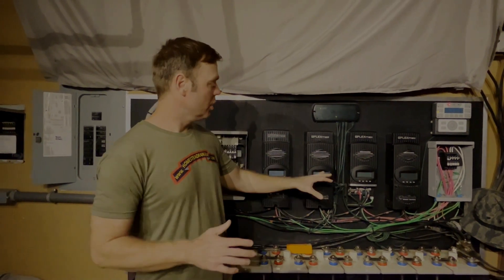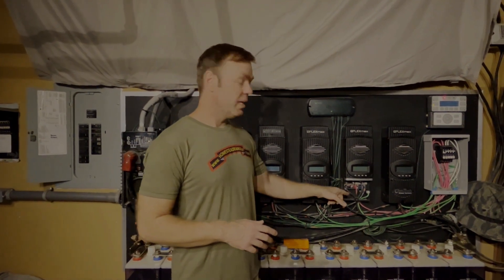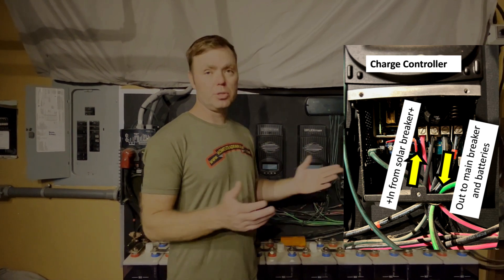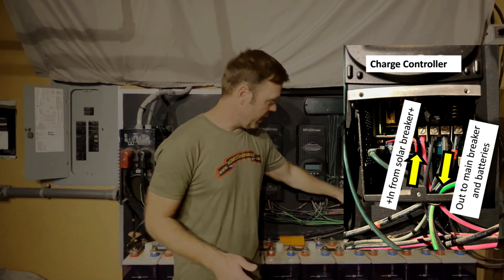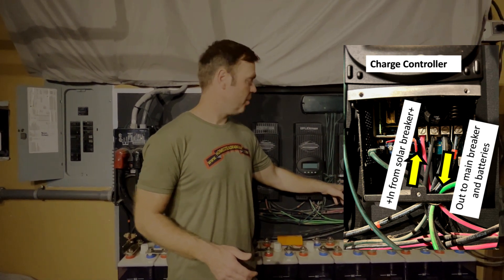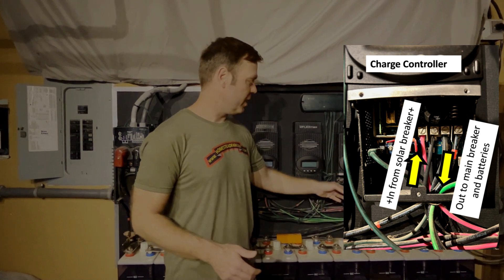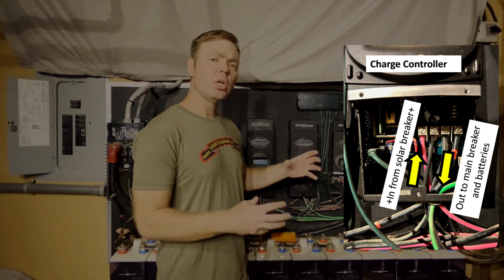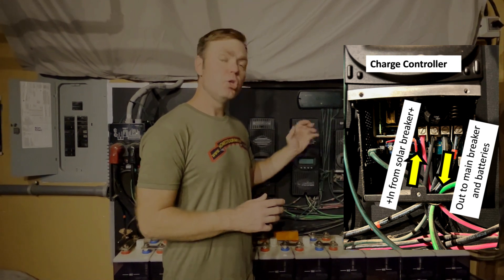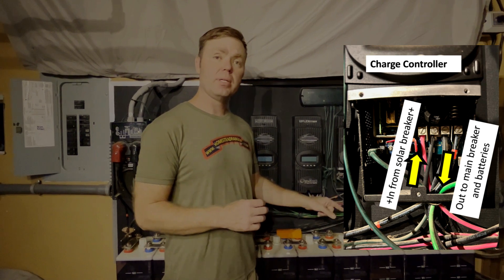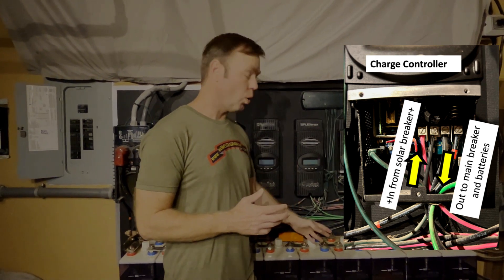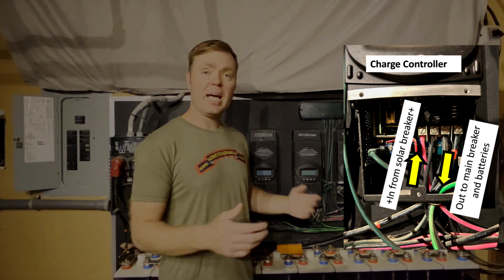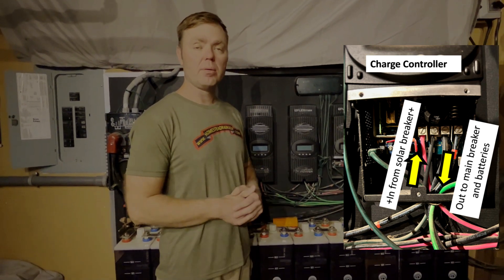We went from the solar panels to the charge controller. The negative wire goes into the charge controller directly, and the positive wire goes through the circuit breaker and then into the charge controller. In the charge controller, there's an in for the positive and an out for the positive, an in for the negative and an out for the negative. Your charge controller is going to take that voltage, which is variable coming from your solar panels, and turn it into the exact voltage and amperage that you need to optimally charge your batteries. Based on what type of batteries you use, you can program it for a lithium-ion battery, a lead-acid battery, or in this case, we have nickel-iron batteries.